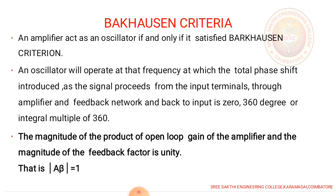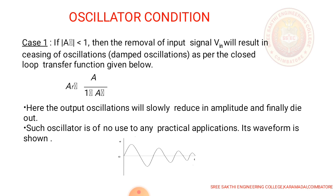That is, the Barkhausen criterion is modulus of A beta equals 1. So then what happens if modulus of A beta is greater than 1 or less than 1? Let us see. There are three cases. First case is modulus of A beta is less than 1. Then removal of input signal will result in ceasing of oscillations as per the transfer function.